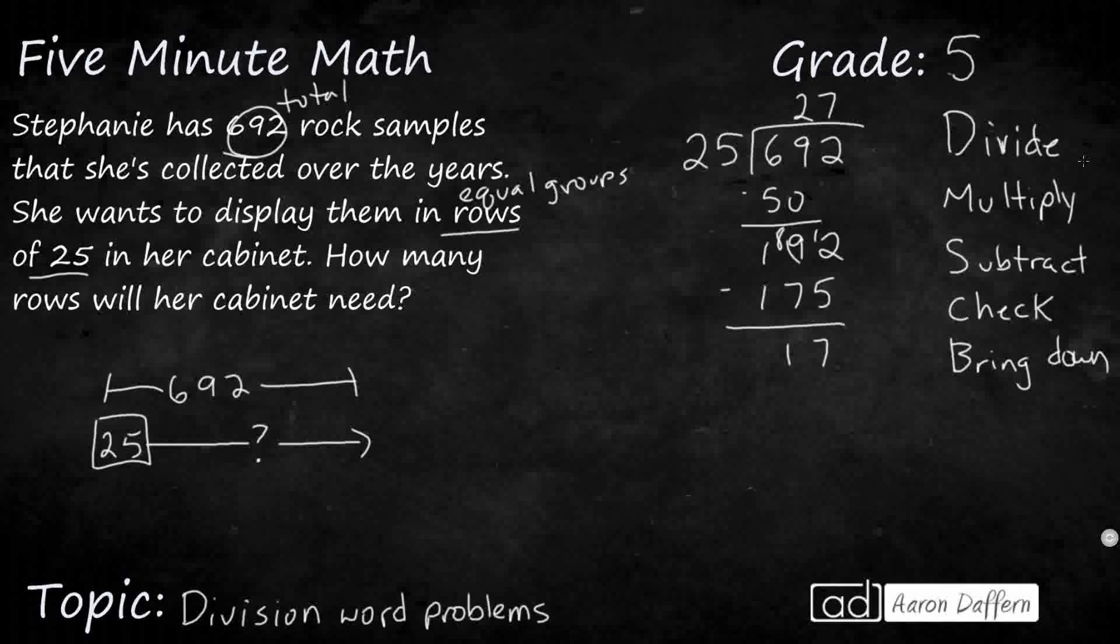So I've got 17 left over. 27 and 17 left over. It doesn't say anything about having incomplete rows. So I'm actually going to need 28 rows to take care of my 27 and 17/25ths rows of rock samples.